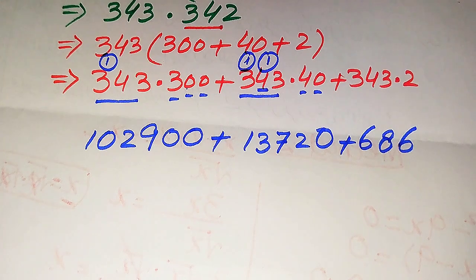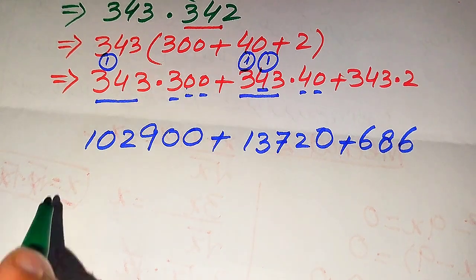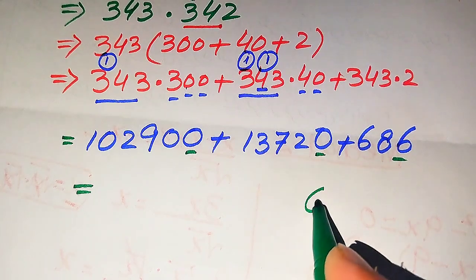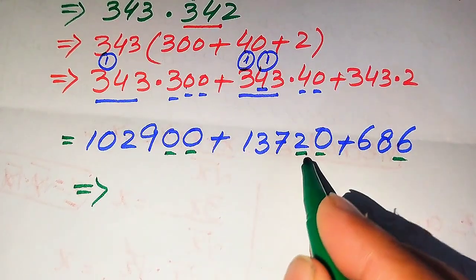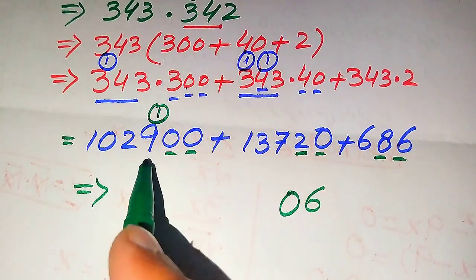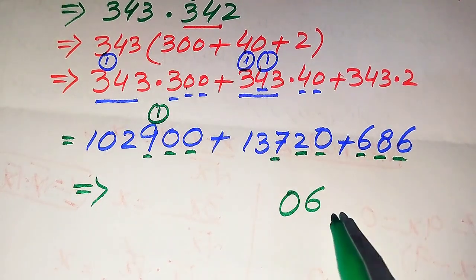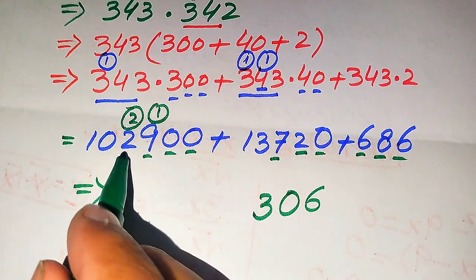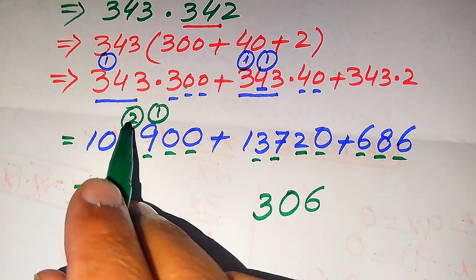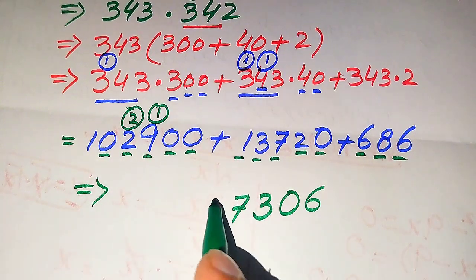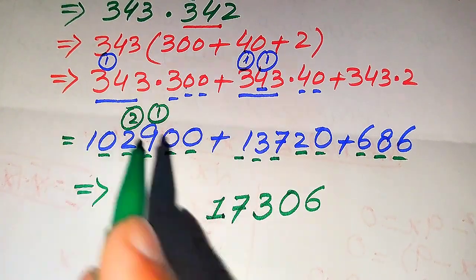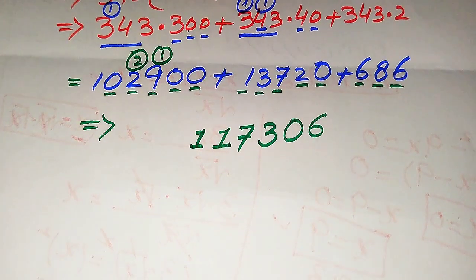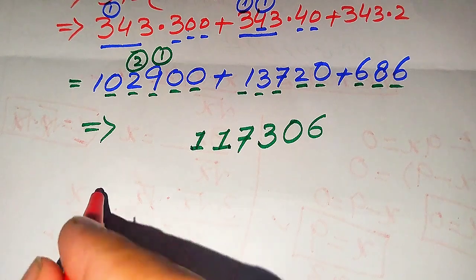Now we sum up all of these values to arrive at the final answer. Adding column by column: 0 plus 0 plus 6 is 6; 0 plus 2 is 2; 2 plus 8 is 10 (write 0, carry 1); 9 plus 1 is 10, plus 6 is 16, plus 6 is 22, plus 1 is 23 (write 3, carry 2); 2 plus 3 is 5, plus 2 is 7; 0 plus 1 is 1; and finally 1. This gives our final answer.